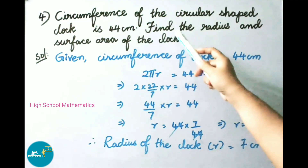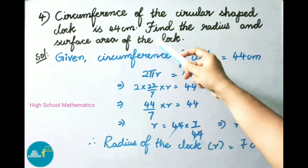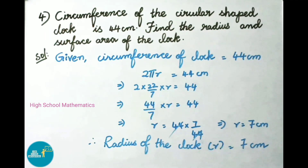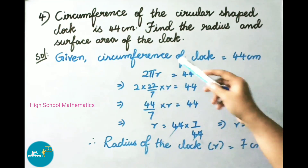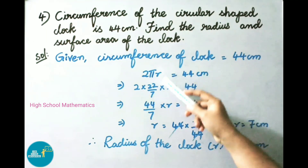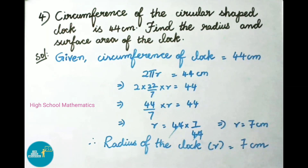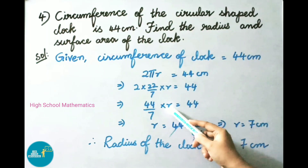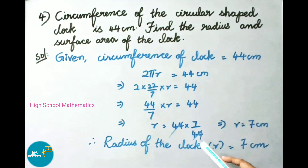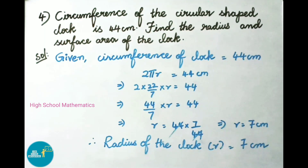See now question number 4. The circumference of the circular shaped clock is 44 centimeters. Find the radius and surface area of the clock. Let us see the solution. Given: circumference of clock is 44 centimeters. Circumference formula is 2 pi R, that equals 44 centimeters. That implies 2 into 22 by 7 into R equals 44, which is 44 by 7 into R equals 44. On transposing, R equals 44 into 7 by 44; the 44s cancel, therefore R equals 7 centimeters. Therefore, the radius of the clock is 7 centimeters.